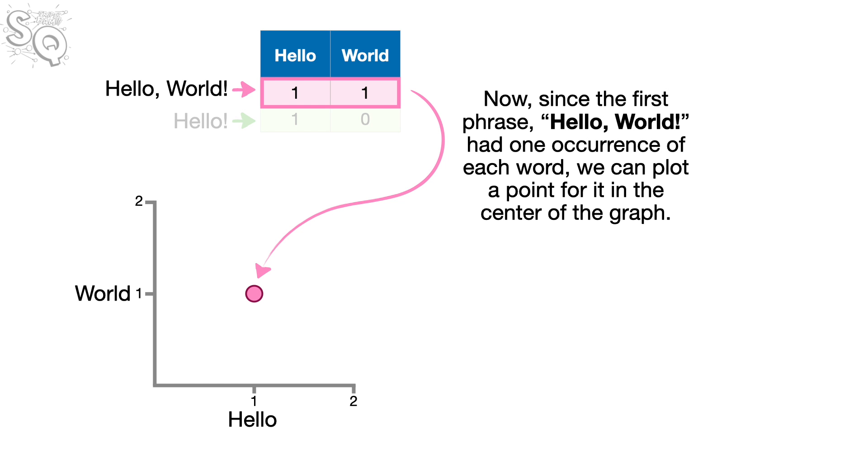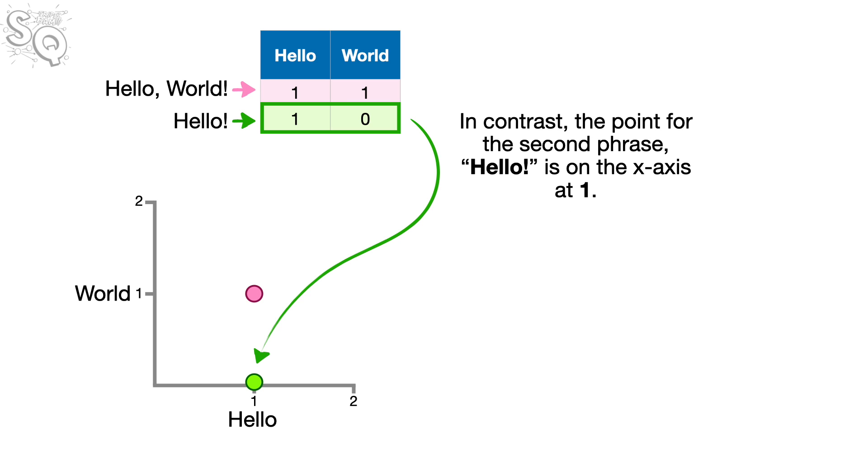Now, since the first phrase, Hello, world! had one occurrence of each word, we can plot a point for it in the center of the graph. In contrast, the point for the second phrase, Hello! is on the x-axis at 1.